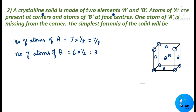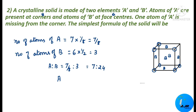The ratio of A to B is 7/8 : 3. Simplifying, this gives 7 : 24. So the simplest formula of the solid is A₇B₂₄. This is how you solve the problem.